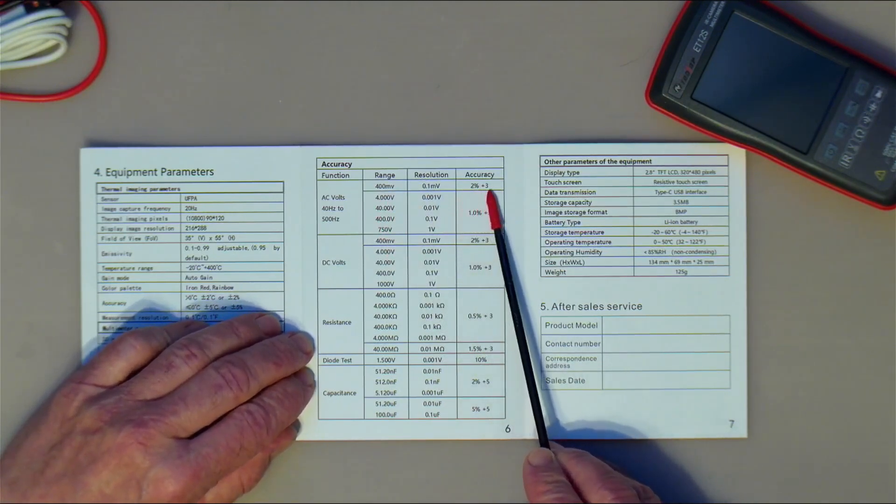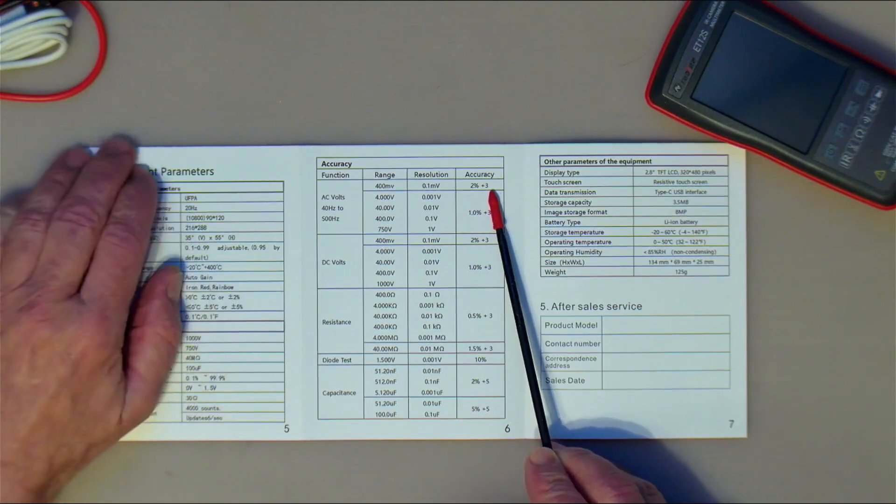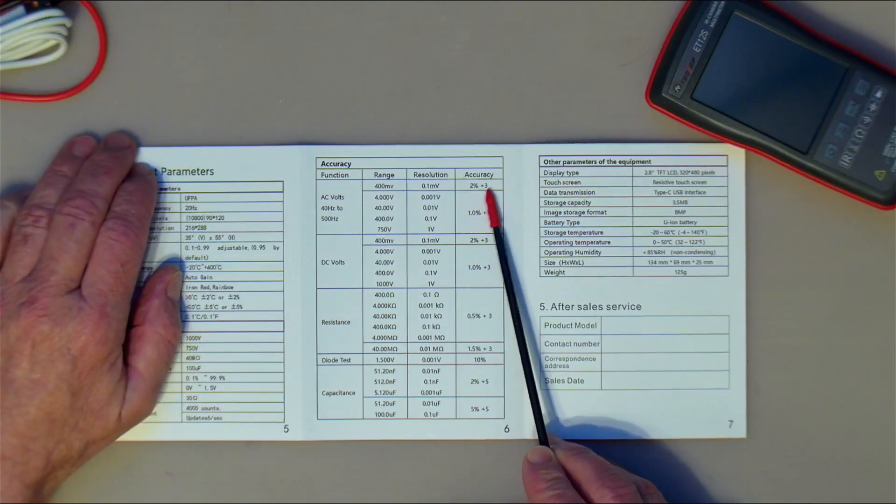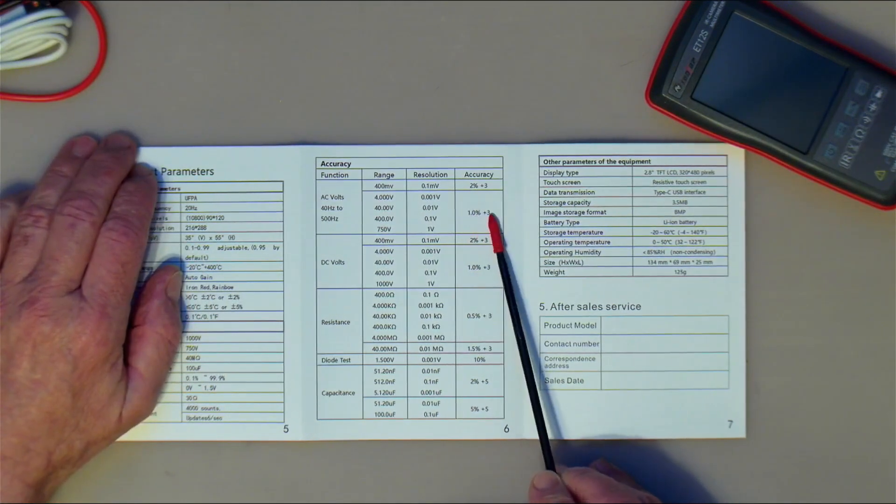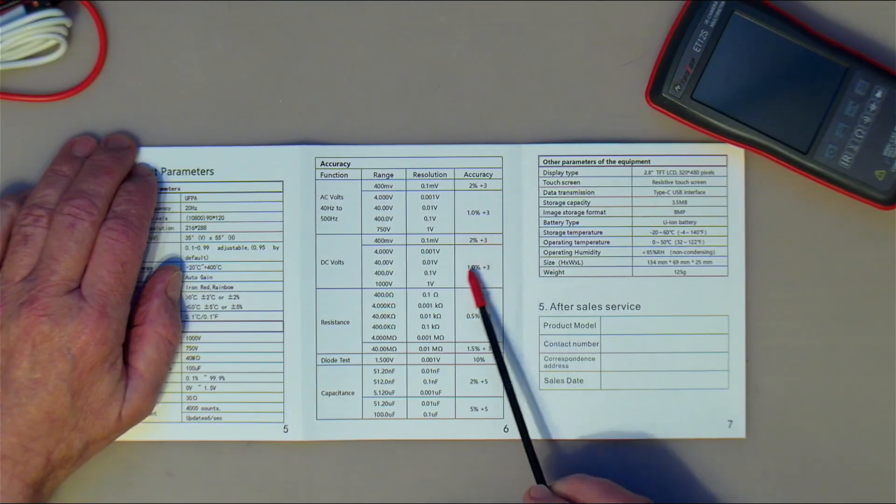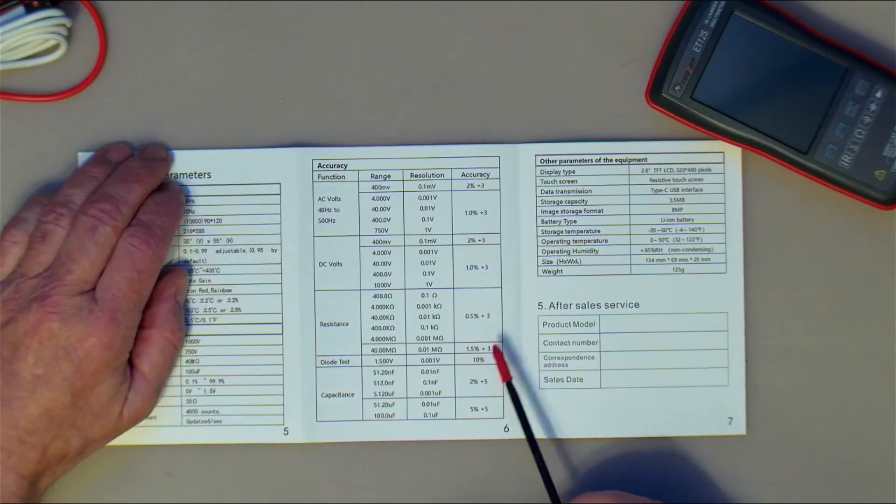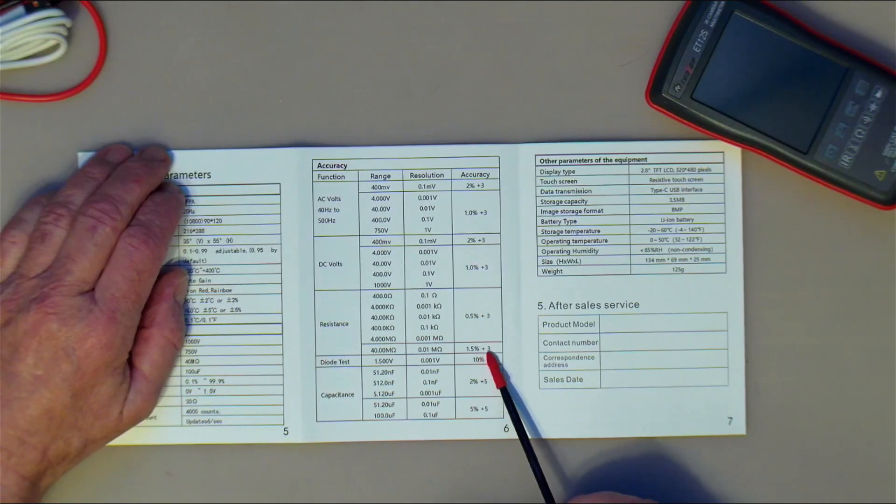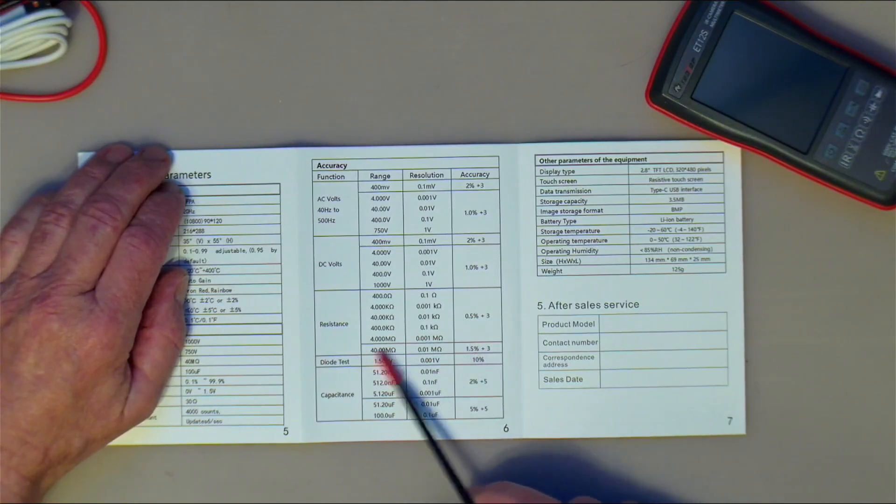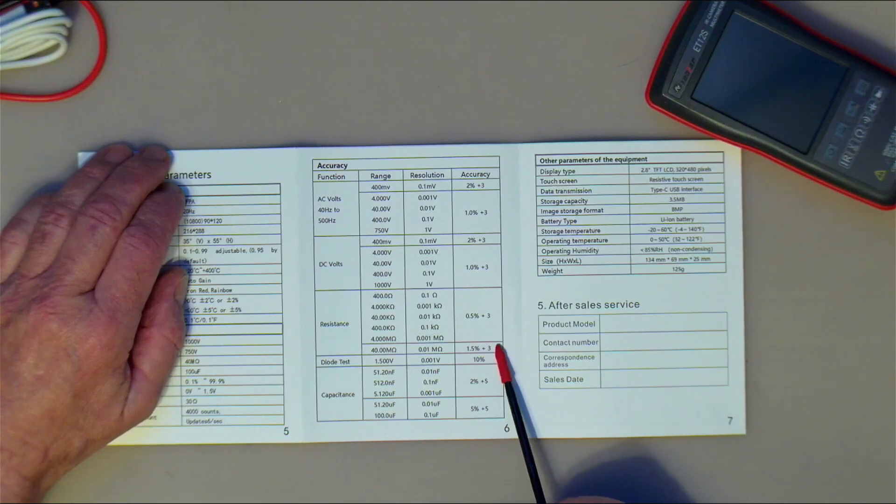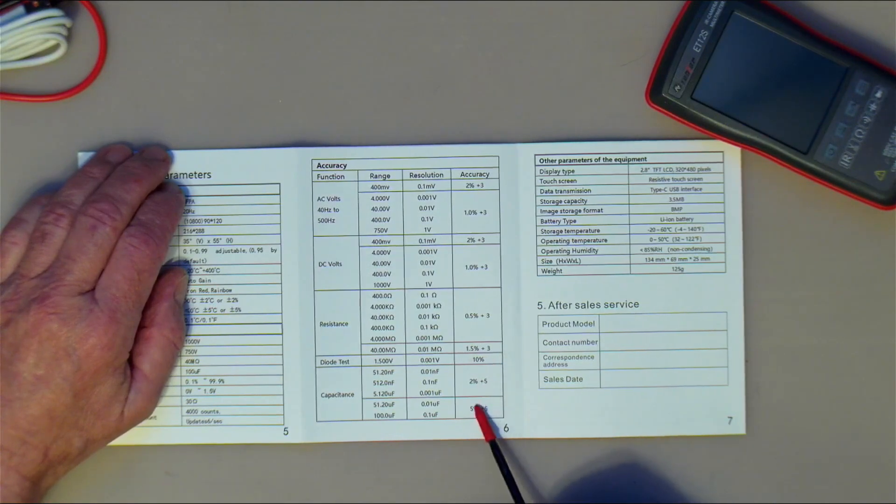The precision accuracy is not very high. Two percent on 400 millivolts, one percent, two percent, one percent, half a percent on ohms. Ten percent on diode tests, one and a half percent on wide resistors, two percent, five percent.